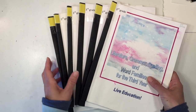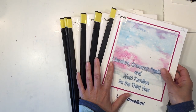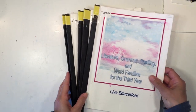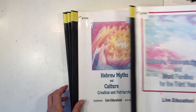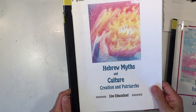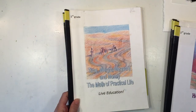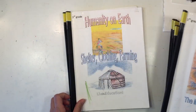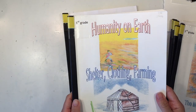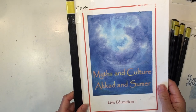So the first thing you might notice about this curriculum is that it's quite small. It comes with six different main lesson books which are going to be your main lesson blocks for the year. You get: Literature, Grammar, Spelling, and Word Families for the third year; Hebrew Myths and Culture - Creation and Patriarchs; Hebrew Myths and Culture - Prophets and Kings; Time, Weight, Measure, and Money - The Math of Practical Life; Humanity on Earth - Shelter, Clothing, Farming; and Myths and Culture - Akkad and Sumer.